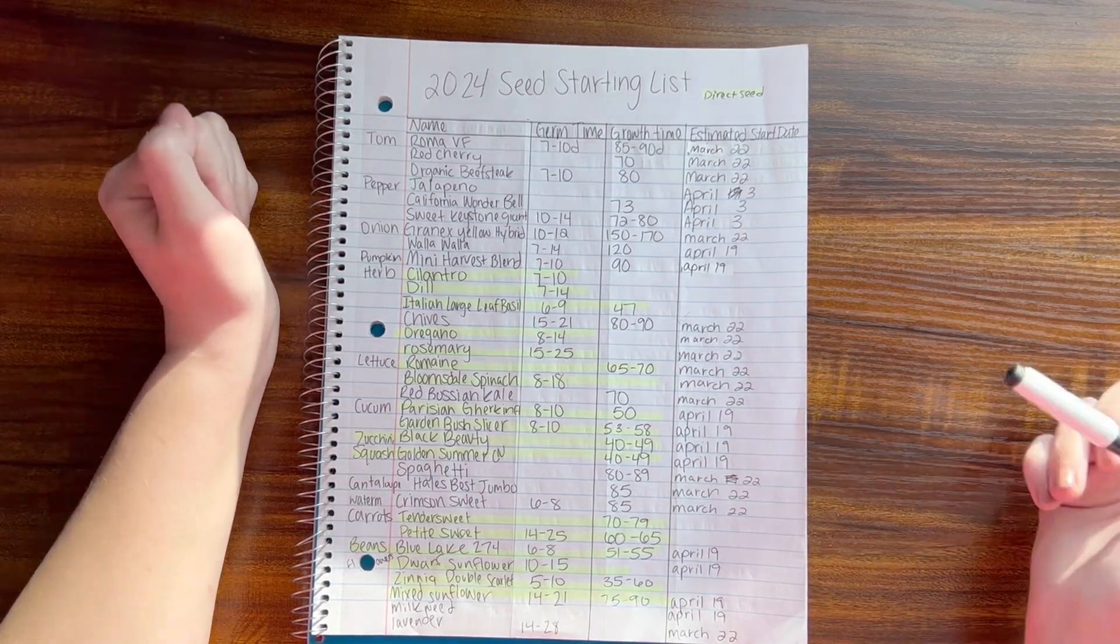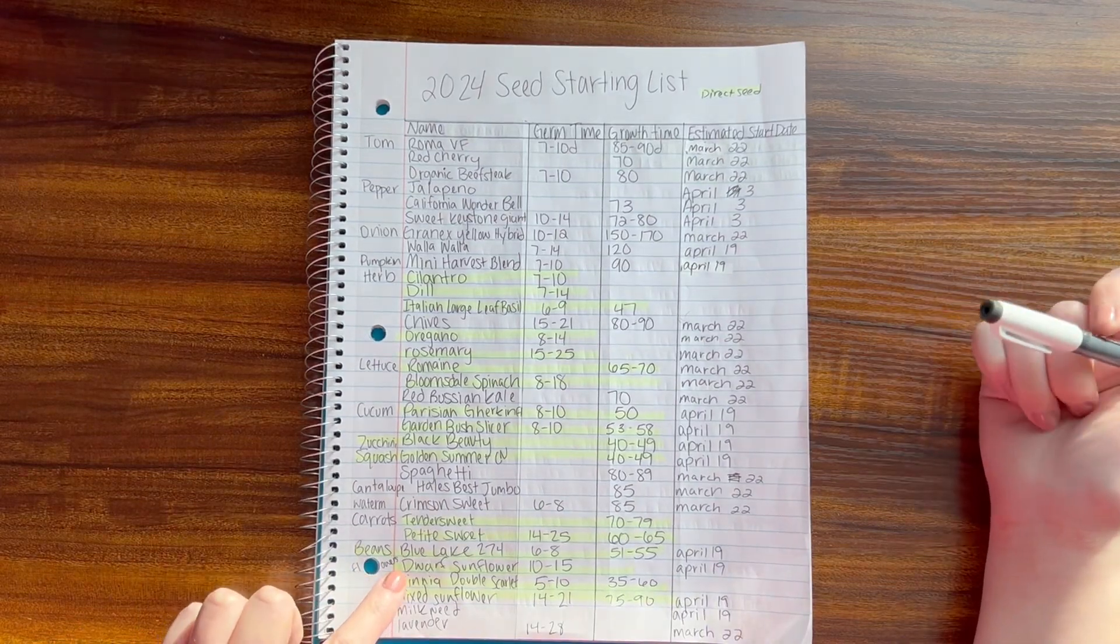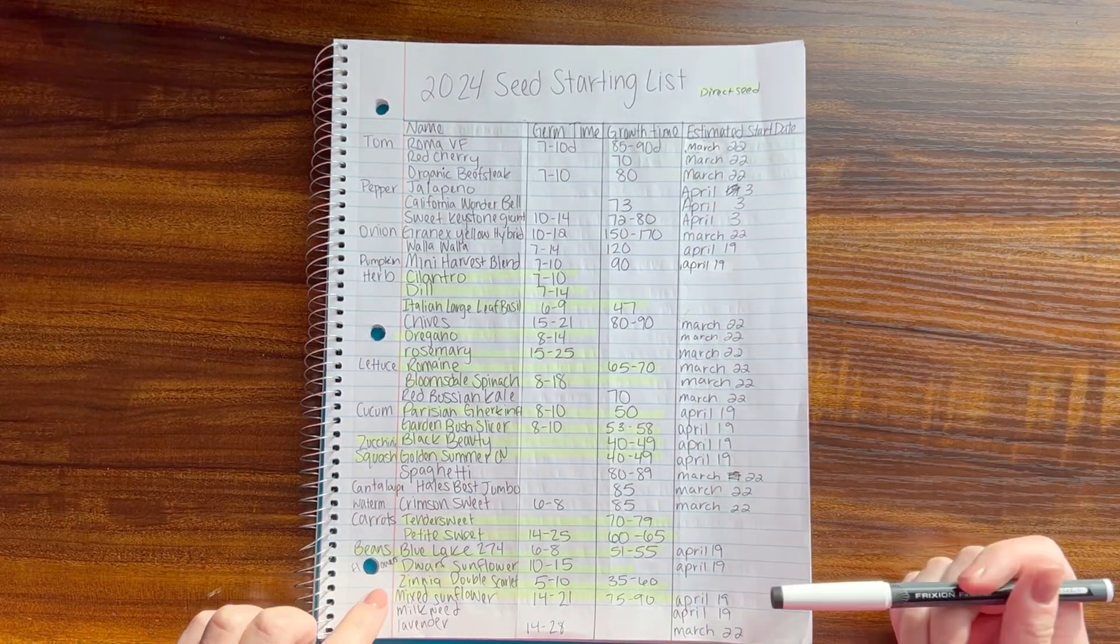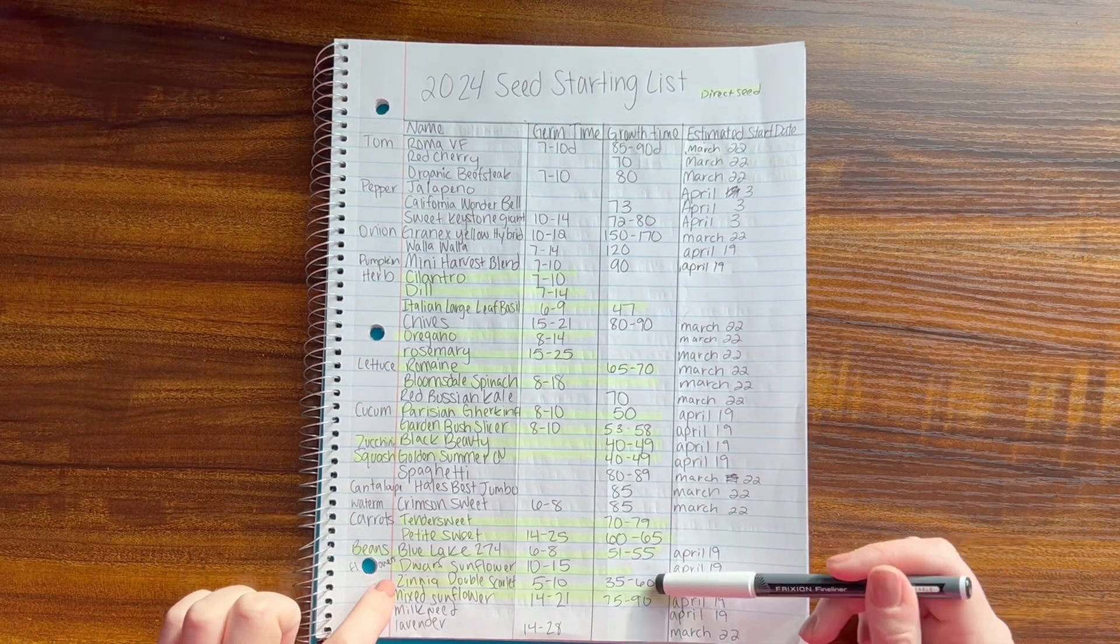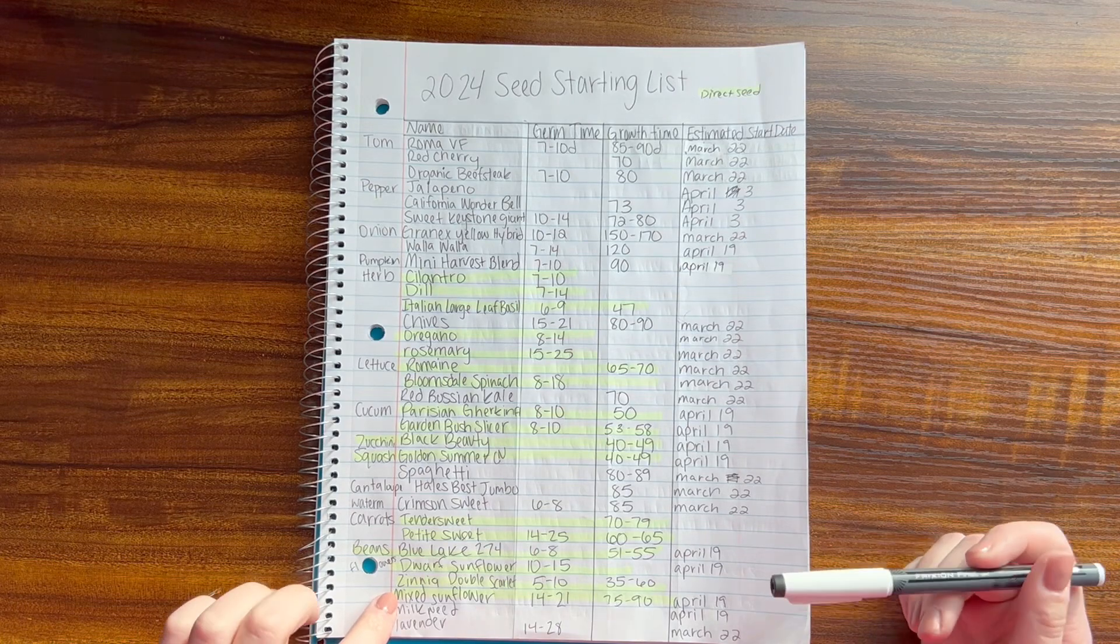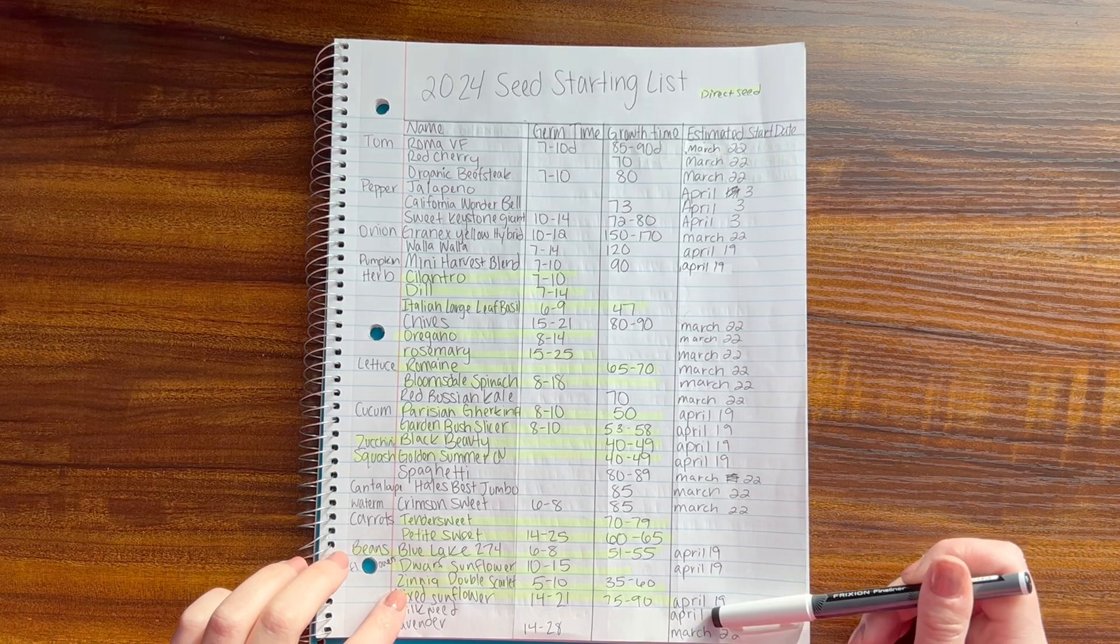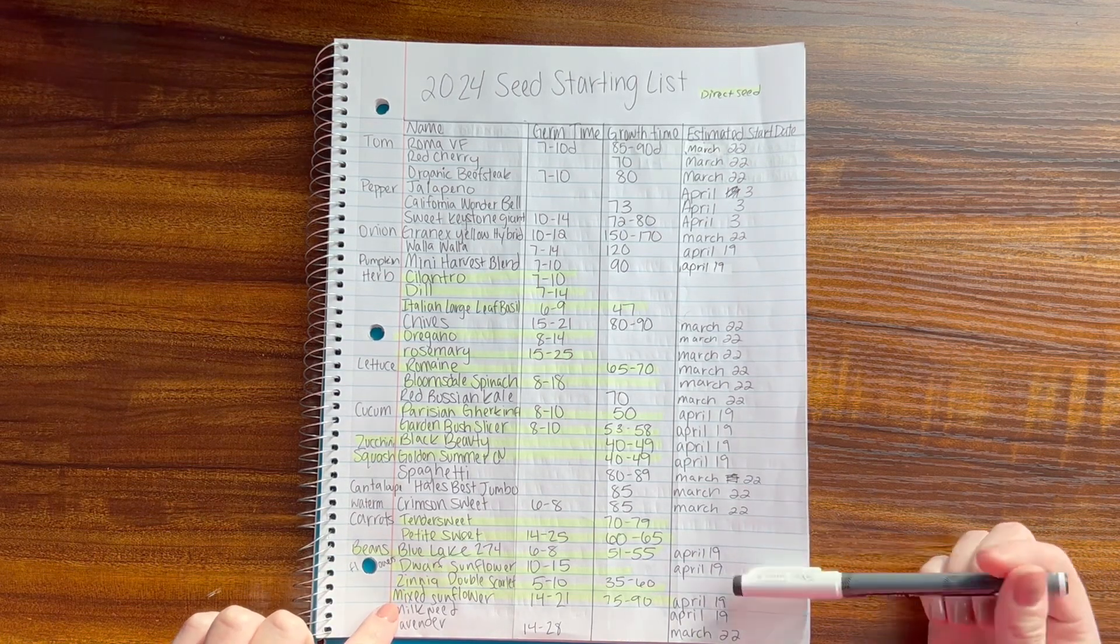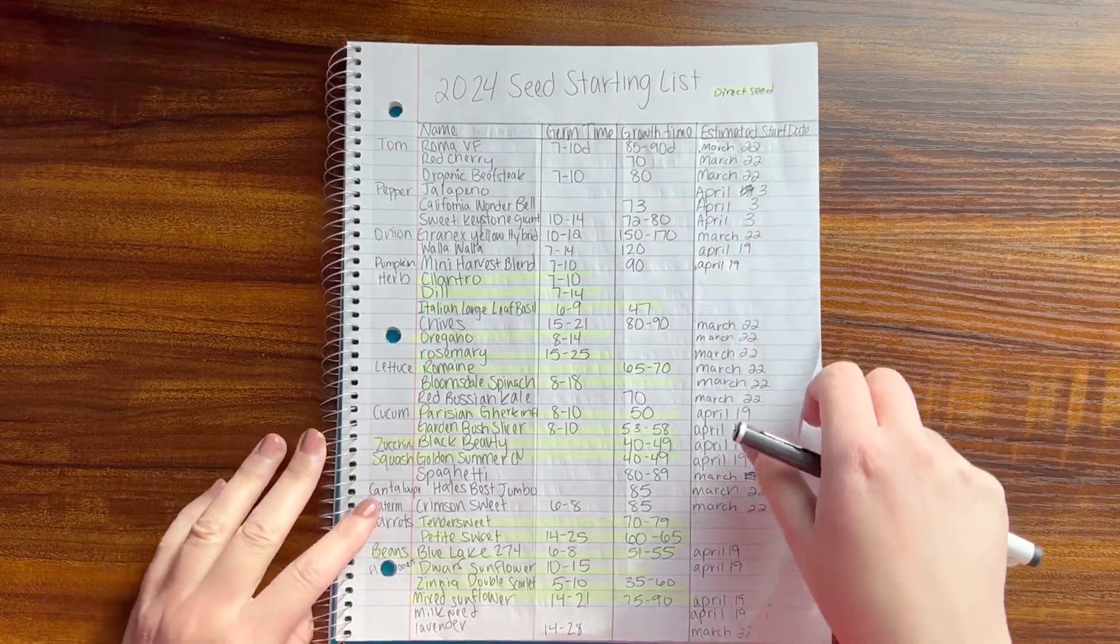And then for flowers, I'm going to do some more dwarf sunflowers and start those on the 19th. Zinnia Double Scarlet, I'm probably going to direct seed those. I have some mixed flower seeds I'm going to plant in the very back, and I'm going to start them on the 19th. I'm going to grow some milkweed for the butterflies, also on the 19th. Lavender, I'm going to start that on the 22nd.